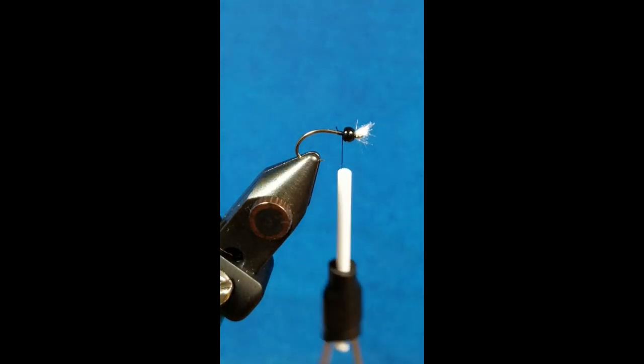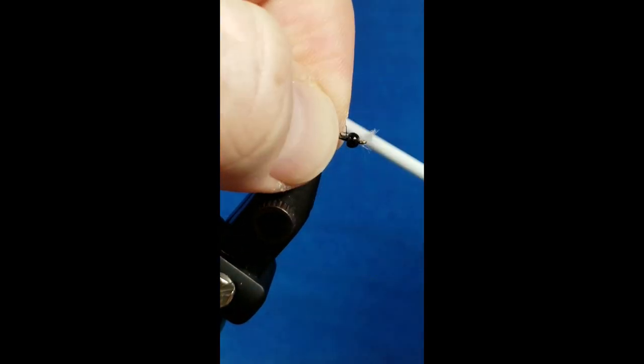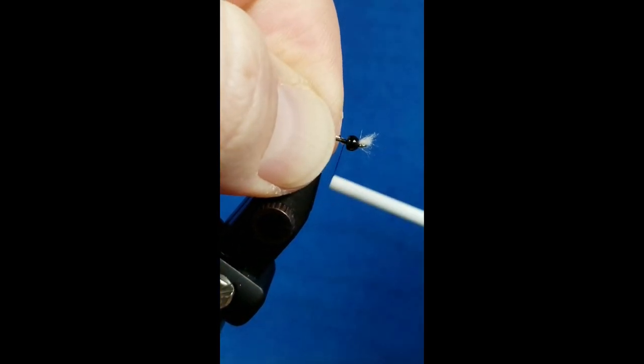First body material that we're going to bring into play is a mid-size clear stretch tubing. I'm just going to put that right up against the bead and catch it with probably four or five good solid wraps.